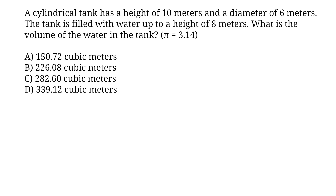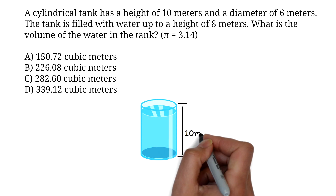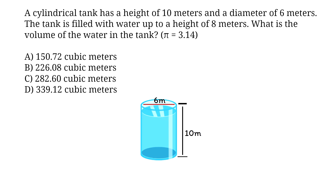A cylindrical tank has a height of 10 meters and a diameter of 6 meters. The tank is filled with water up to a height of 8 meters. What is the volume of the water in the tank? A, 150.72 cubic meters. B, 226.08 cubic meters. C, 282.60 cubic meters. D, 339.12 cubic meters. Let's have a pictorial representation of the information given. Take this as our cylinder — the height is 10 meters and the diameter is 6 meters. The water is filled to only 8 meters of the height.